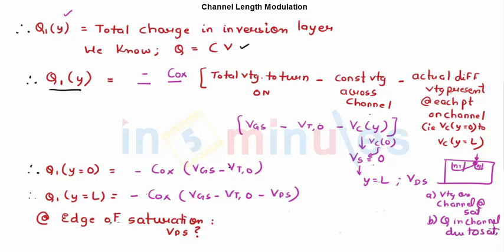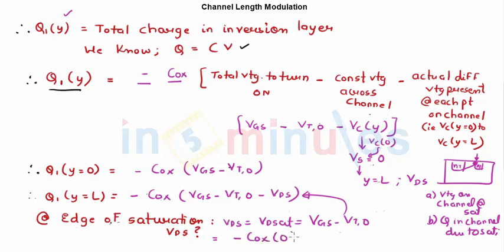At saturation, VDS equals VDSat, which equals VGS minus VT. Substituting this value of VDS into the equation at Y equal to L gives minus COX times 0, which is 0. So the total charge at the drain end becomes approximately 0, and the channel is pinched off. That's where we get the shape of the channel as already understood.